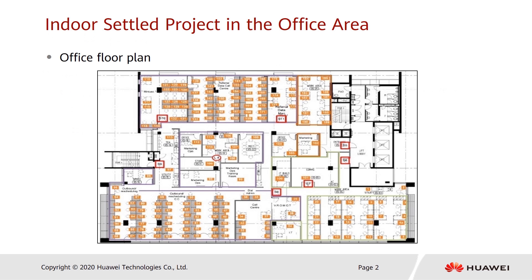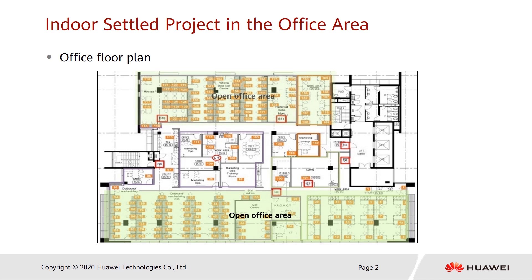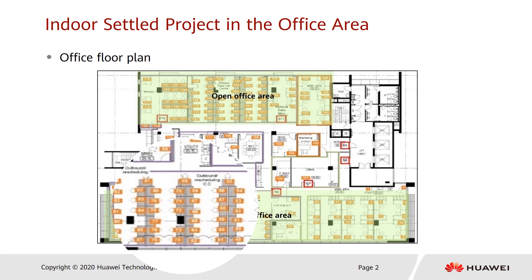First of all, let's look at a specific planning case. This is the floor plan of an office area. The entire area is divided into three parts. The first part includes the open office areas — large open spaces with only some bearing pillars marked black, without solid walls. The numbered positions are office desks, densely distributed in the entire area.